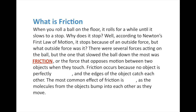Friction occurs because no object is perfectly smooth. At the molecular level, atoms and molecules aren't laid out perfectly straight — there are little jags and edges. When two objects rub against each other, these edges catch each other and slow things down. The most common effect of friction is heat: when you rub your hands together to warm them up, the mechanical energy transfers into thermal energy — which we'll talk about in our next chapter on energy transformations.